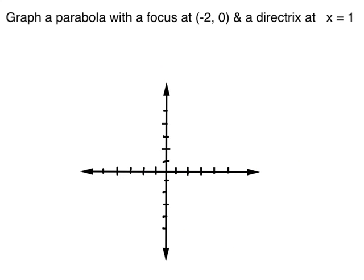The last parabola is a little different. This one has a focus at (-2, 0) but a directrix at x equals 1 — a different kind of directrix. The focus at (-2, 0) means going left 2 and staying on the x-axis. The directrix is an x-line, so I find 1 on the x-axis, and the line is actually a vertical line this time at x equals 1. The vertex is going to be exactly the same distance from the focus and from the directrix, so it's right there.